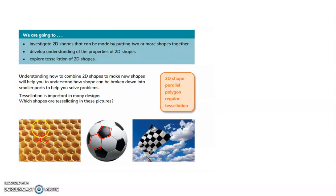I hope tessellation is clear. Tessellation means covering a flat surface by using one or more geometric shapes in such a way that there are no gaps or overlaps. You will understand this very easily. Please watch the video, children. If you have any doubts, please do post them. With that, I will stop today's session. Thank you and take care.